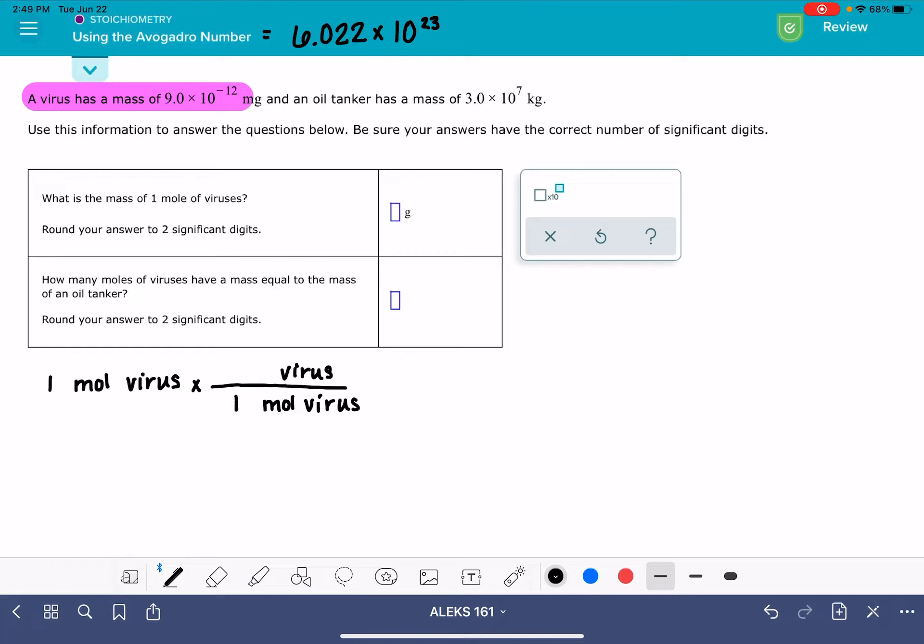We know from Avogadro's number that one mole of anything is 6.022 times 10 to the 23rd. I didn't really leave myself enough room there. In this first step, what we're doing is going from a mole of viruses, calculating the number of individual viruses.